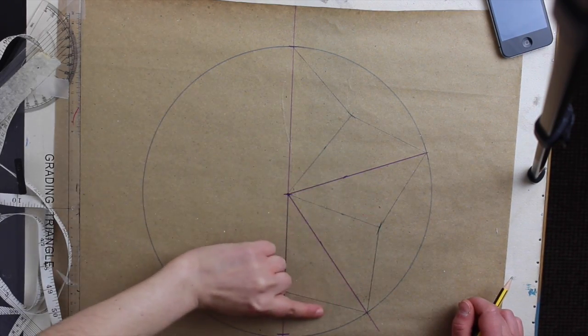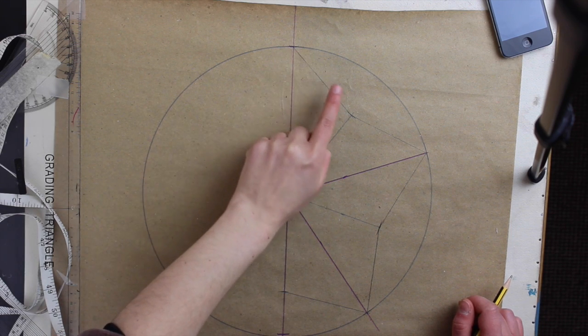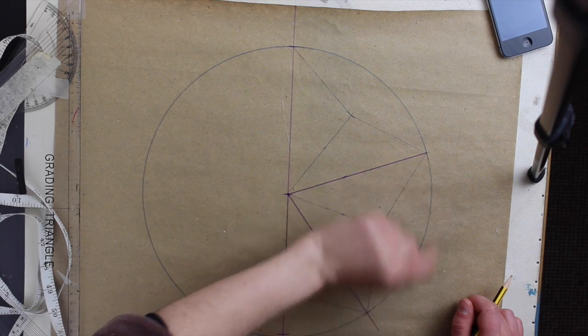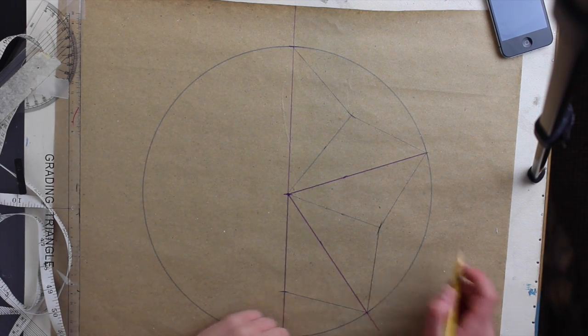Alright, so now you have your basic star shape. As you can see, these are quite sharp lines. So we need to make it a bit softer and a bit rounder. You can leave it like this if that is something you like.